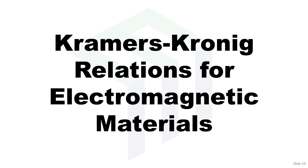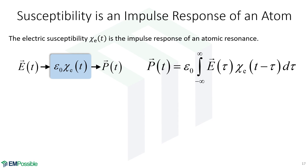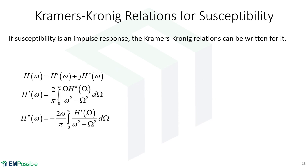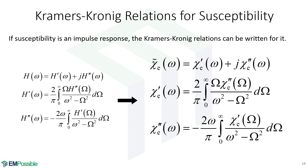Let's apply what we've learned about the Kramers-Kronig relations to electromagnetic systems. The electric susceptibility really is the impulse response of an atom — it's a real physical thing, it must be causal, and it is purely real. We can Fourier transform it and think about the susceptibility as a transfer function in the frequency domain. Given that the susceptibility is an impulse response, with epsilon-not as a scaling factor, we can take what we derived for the general transfer function and write it for the susceptibility. That gives us the Kramers-Kronig relations for the electric susceptibility.